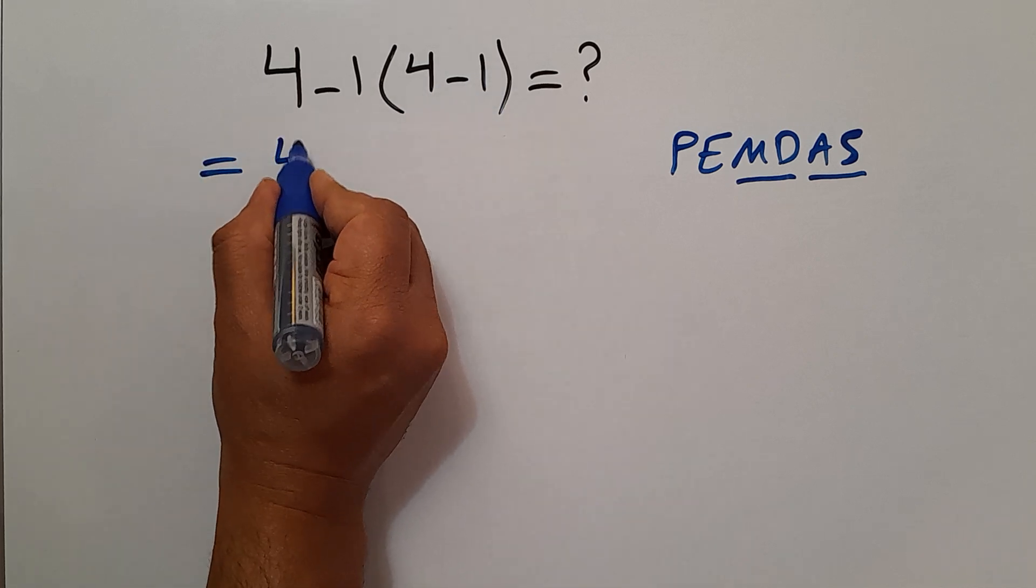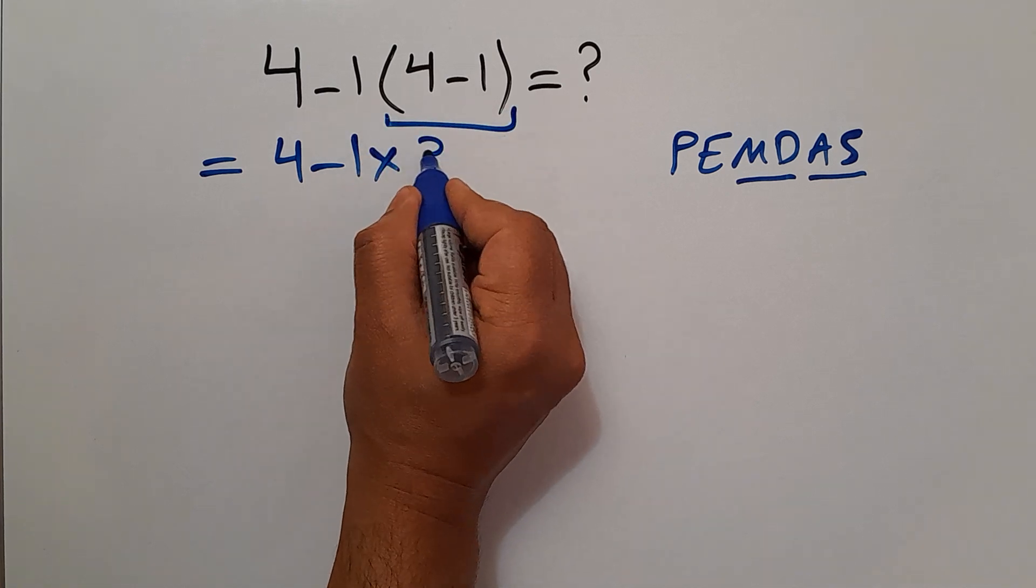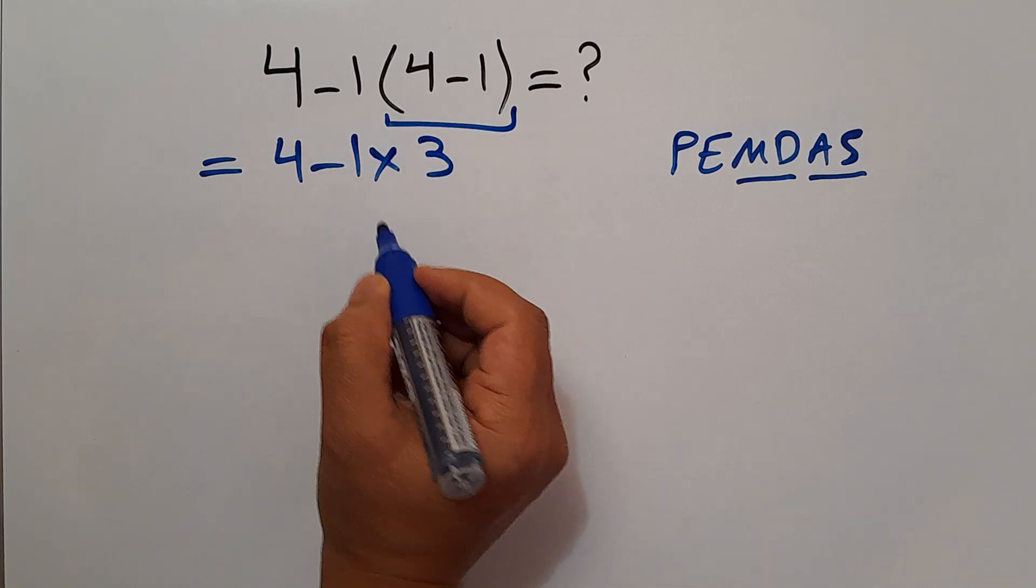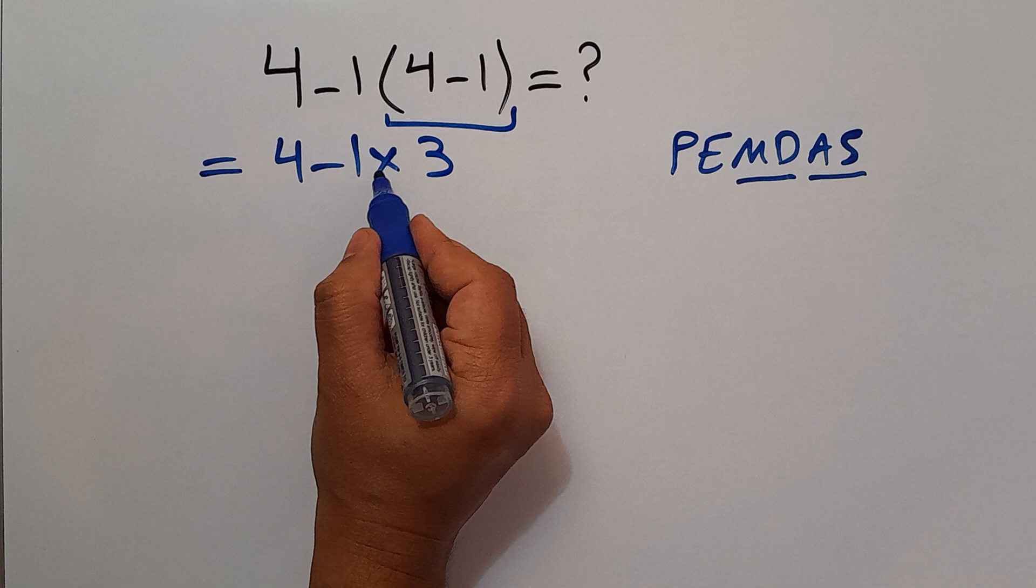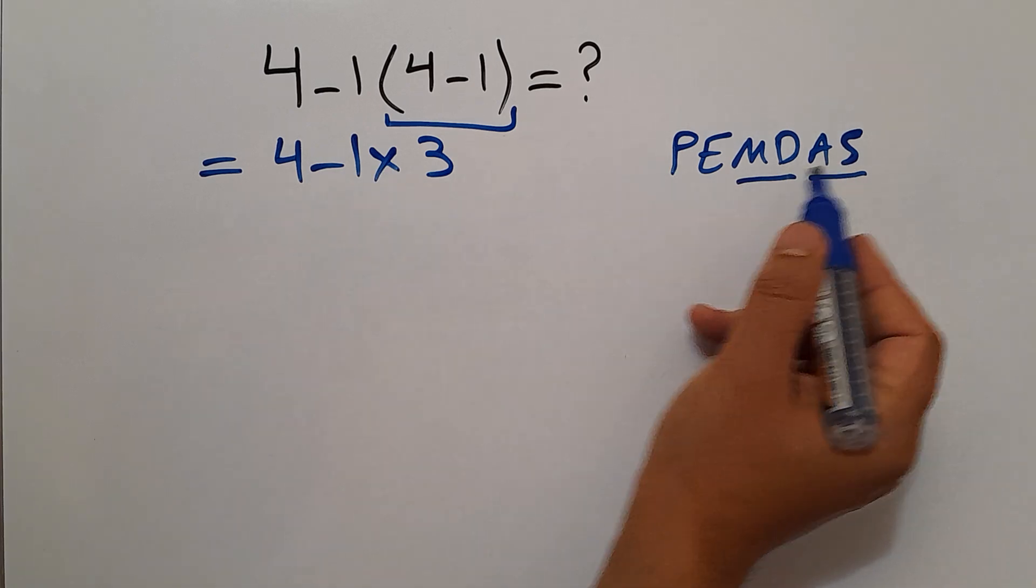Now we have 1 subtraction and 1 multiplication. According to PEMDAS, multiplication has higher priority than subtraction, so first we do this multiplication.